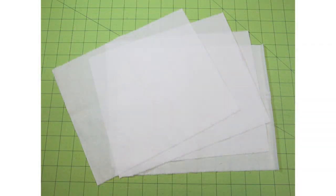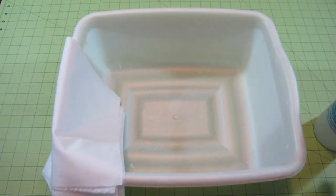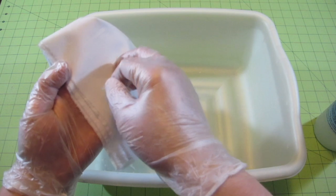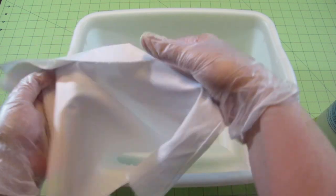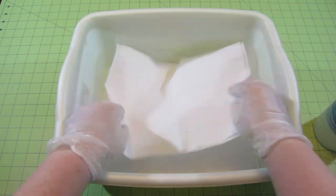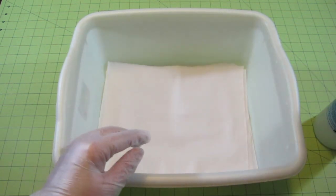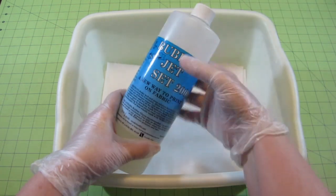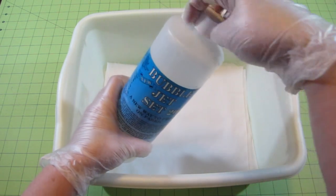To use Bubble Jet Set, first cut your fabric slightly larger than your backing paper. This makes it easy to cut when attaching the fabric to the backing paper. Place the fabric sheets in a tray and make sure to lay them flat. You can soak as many fabric sheets as you like at one time. Shake the bottle well and then pour some solution over the fabric. You only need to use as much solution as it takes to cover the fabric. Then leave it to soak for 5 minutes.